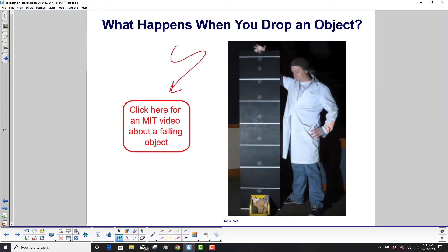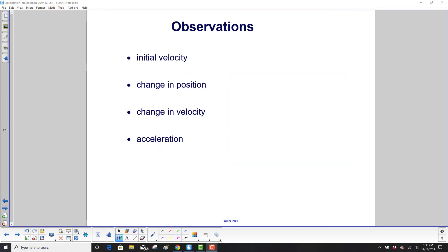Please click over here for an MIT video about a falling object. There are four observations that can be made about that video: initial velocity, your change in position, your change in velocity, and then the acceleration.